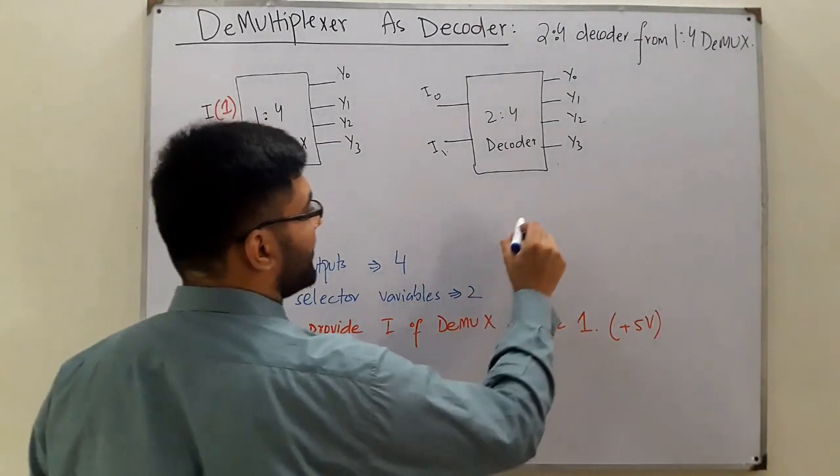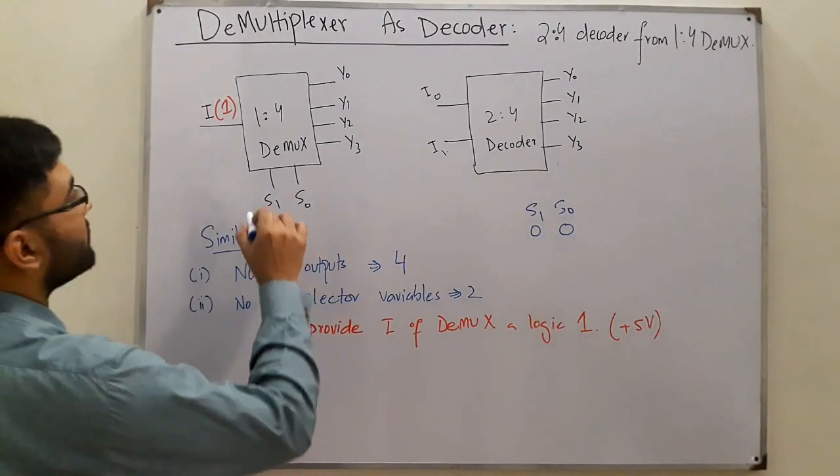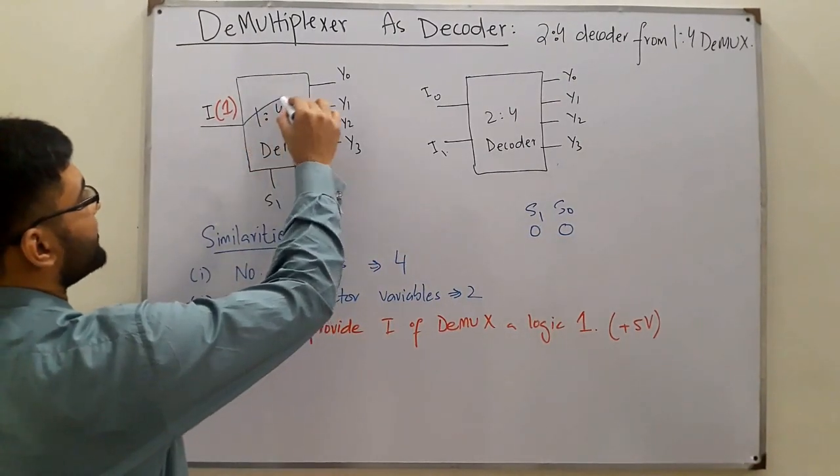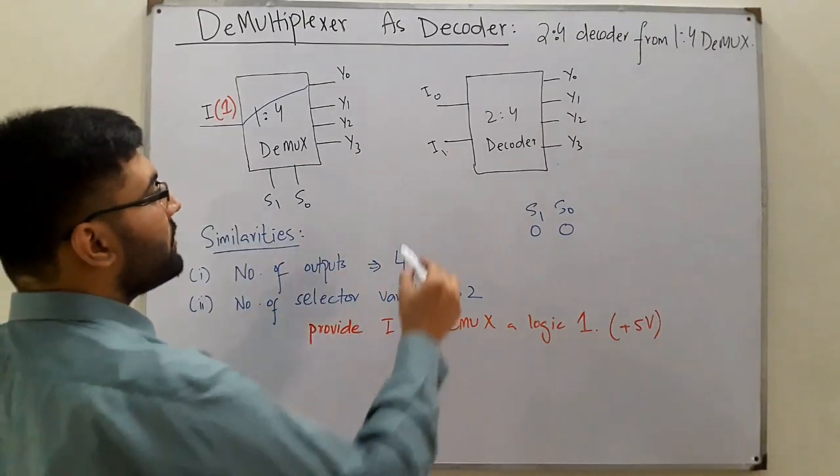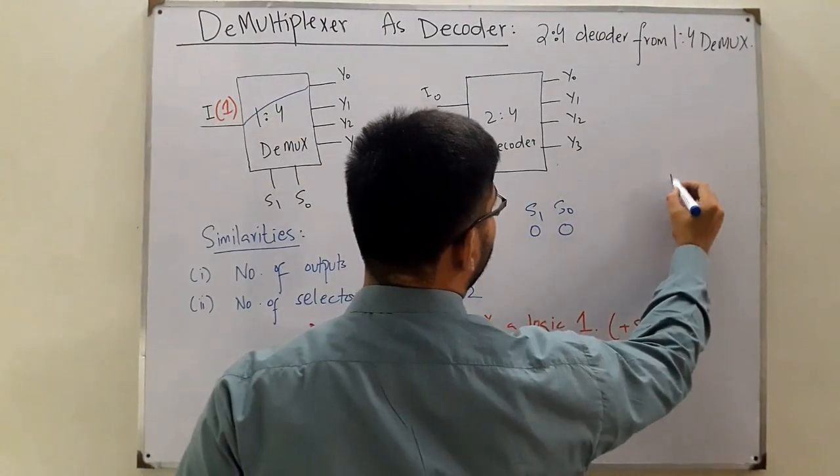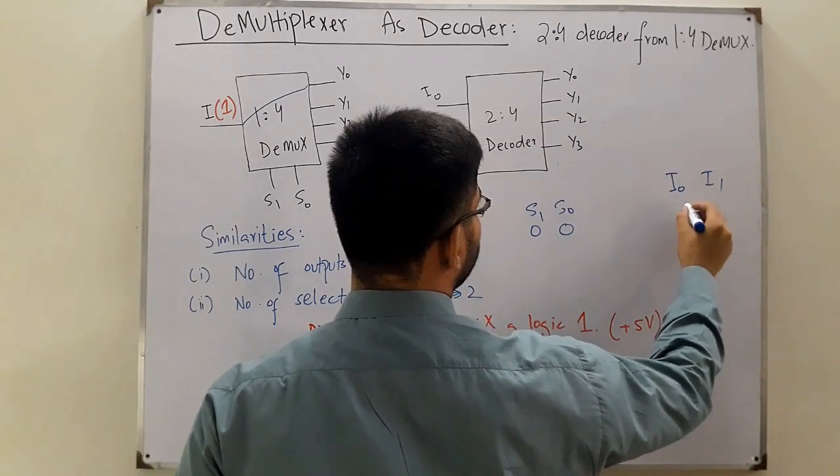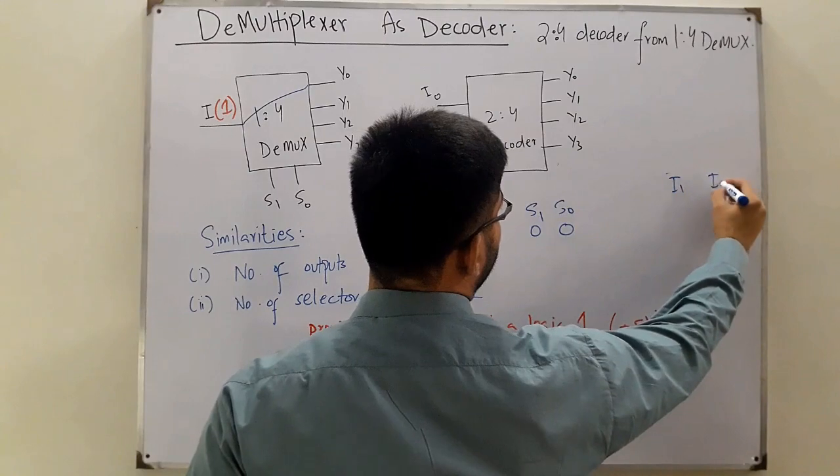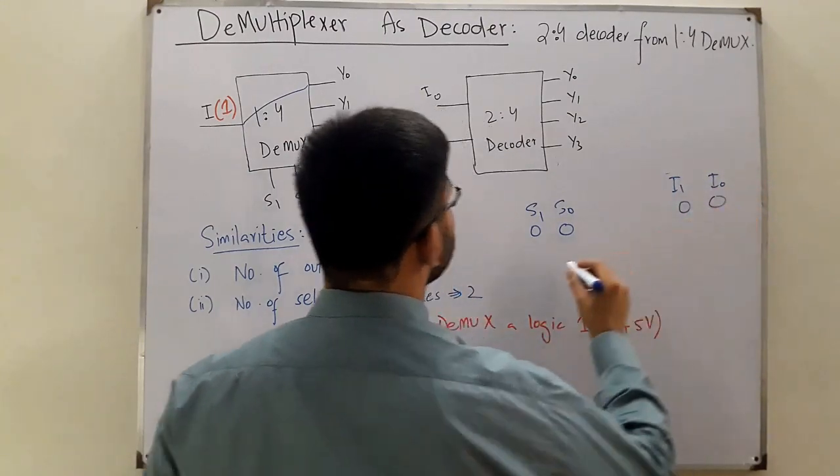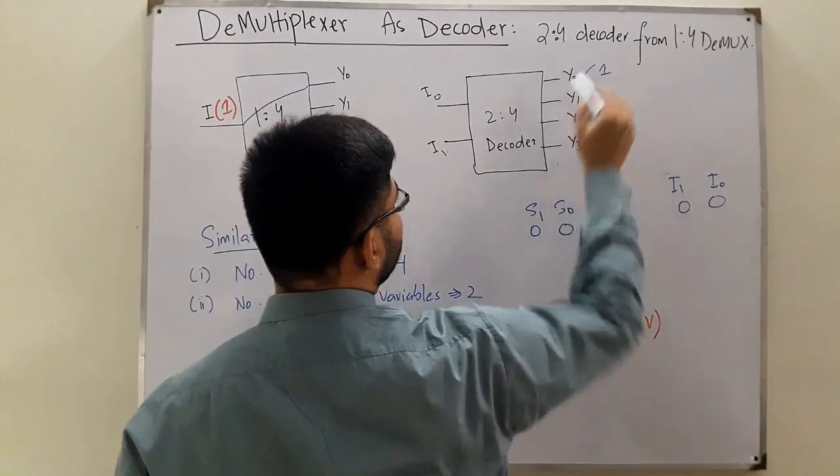Look at the truth table. If S1 and S0 are both zero, this one would be connected to Y0. If I1 and I0 are both zero, Y0 is set as high.